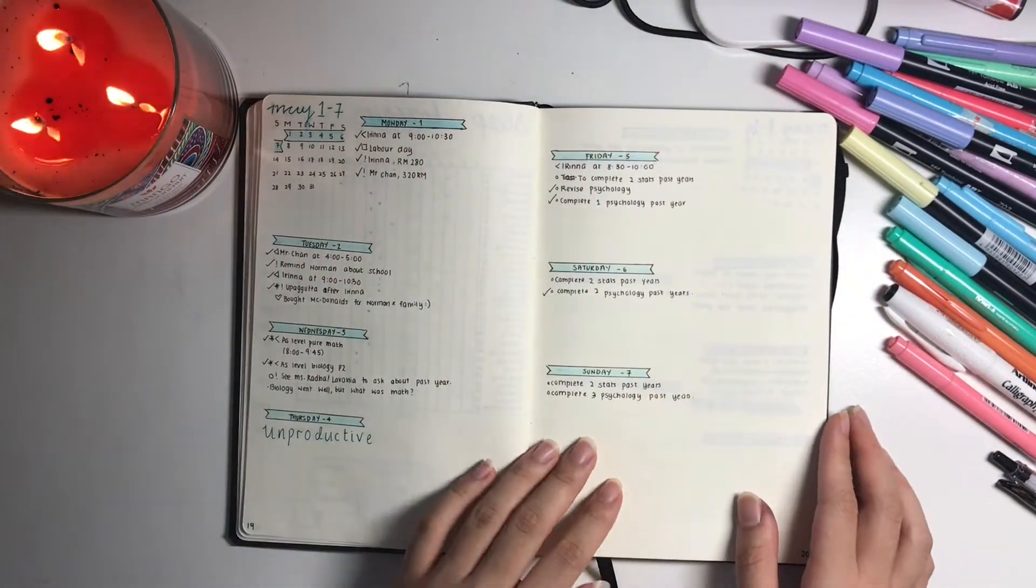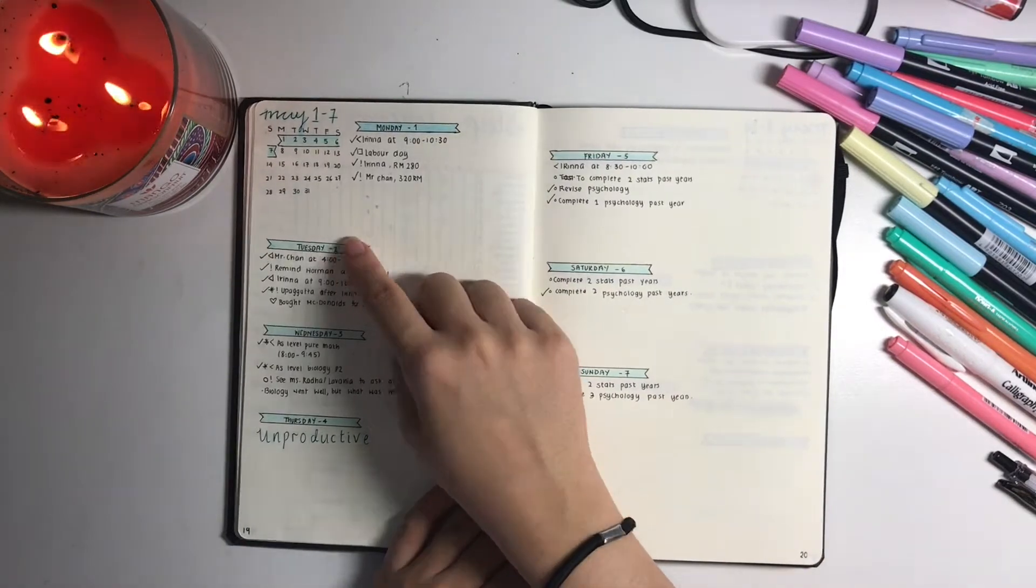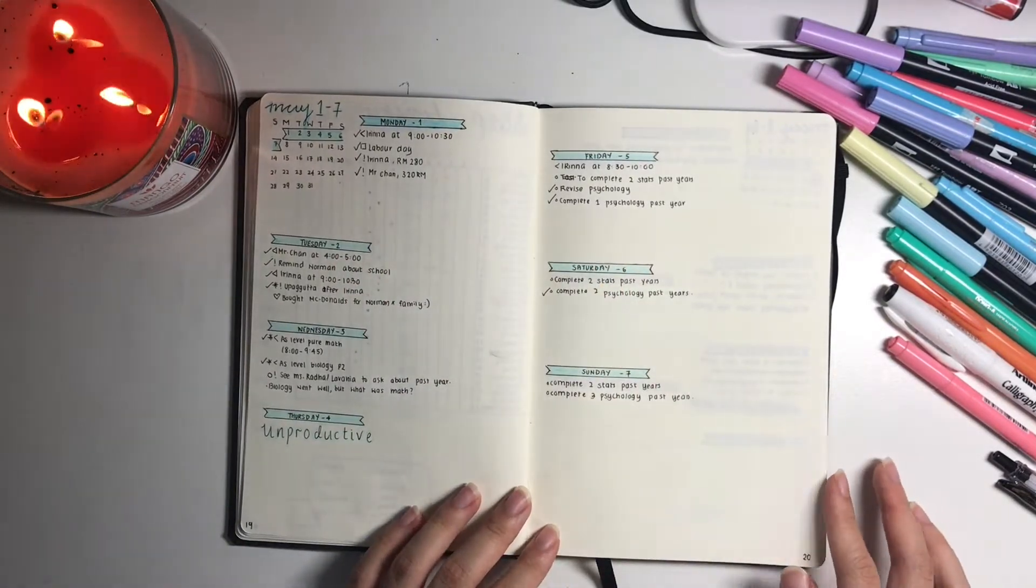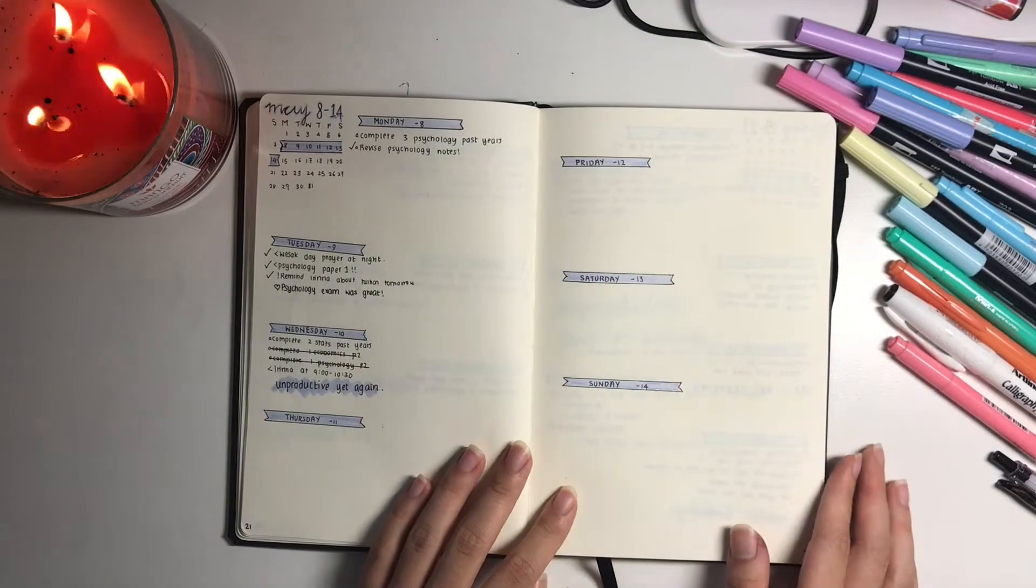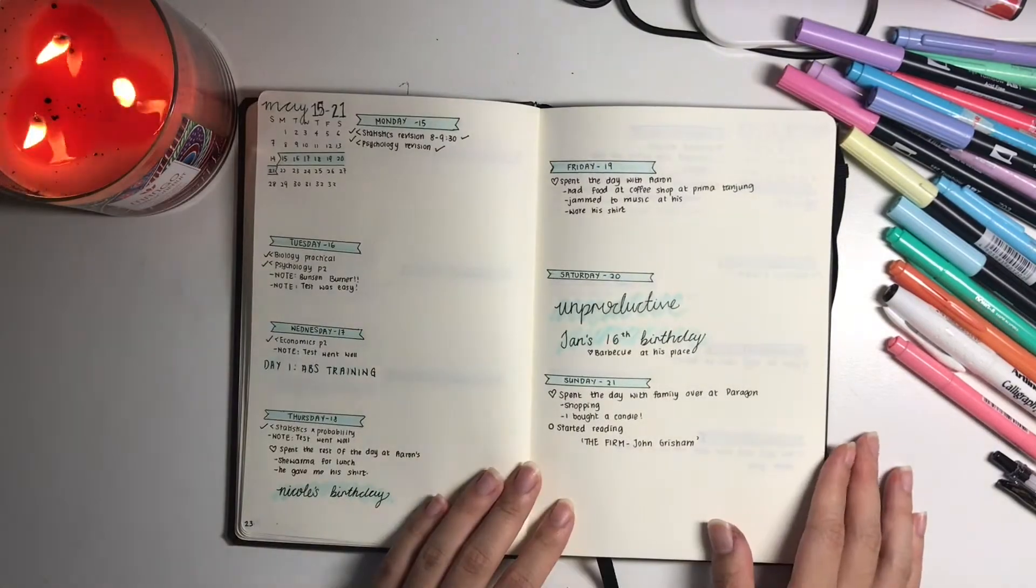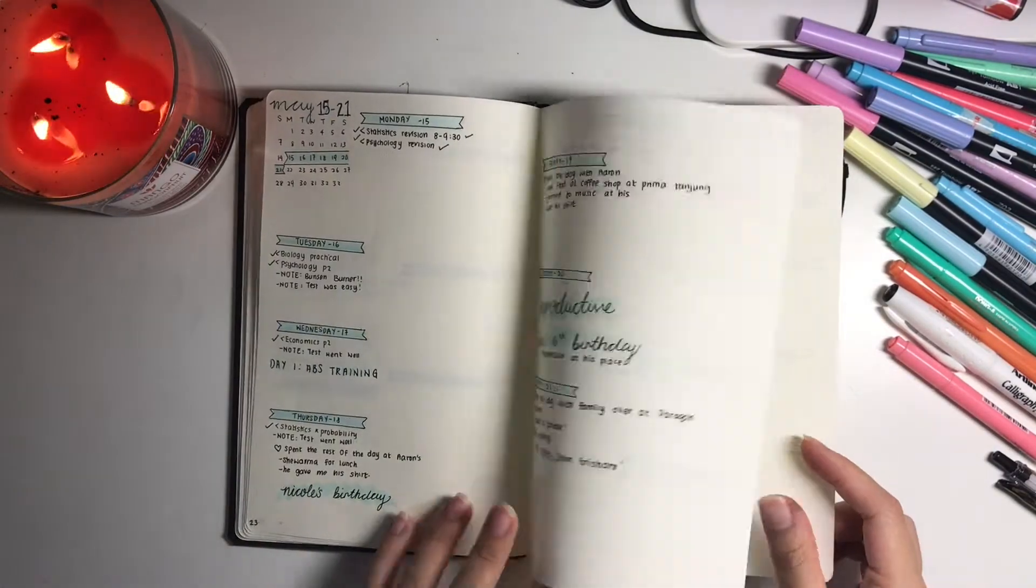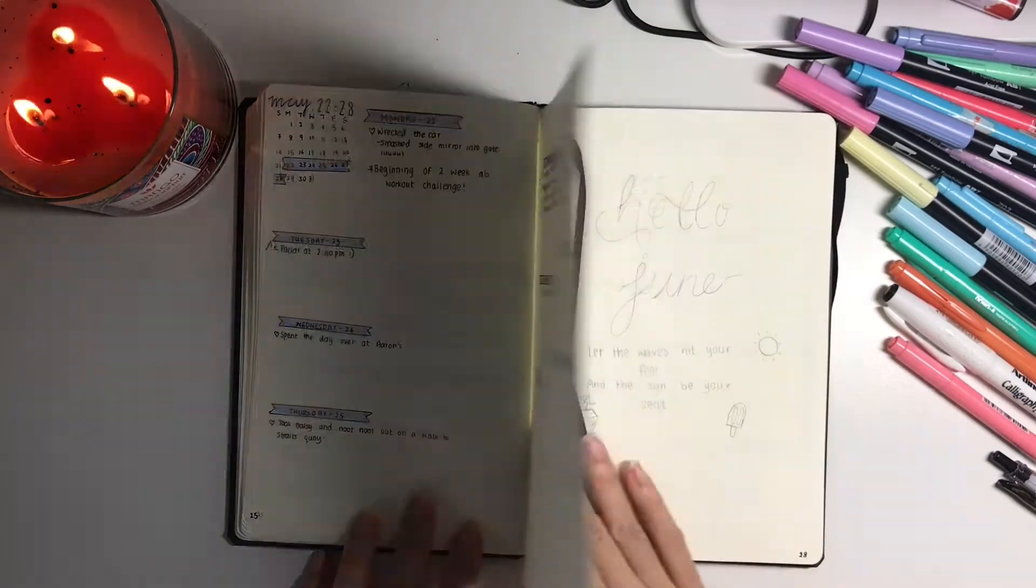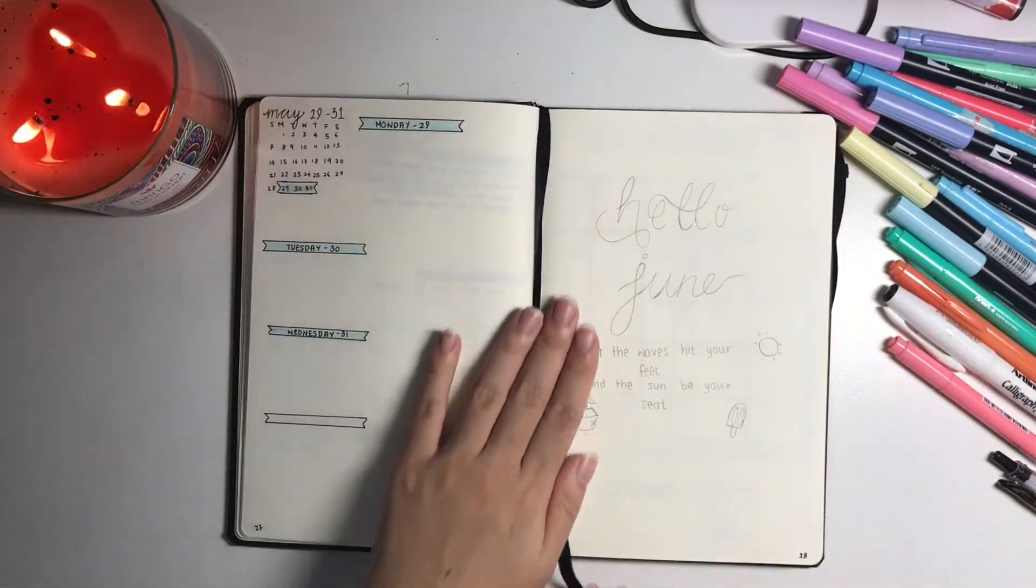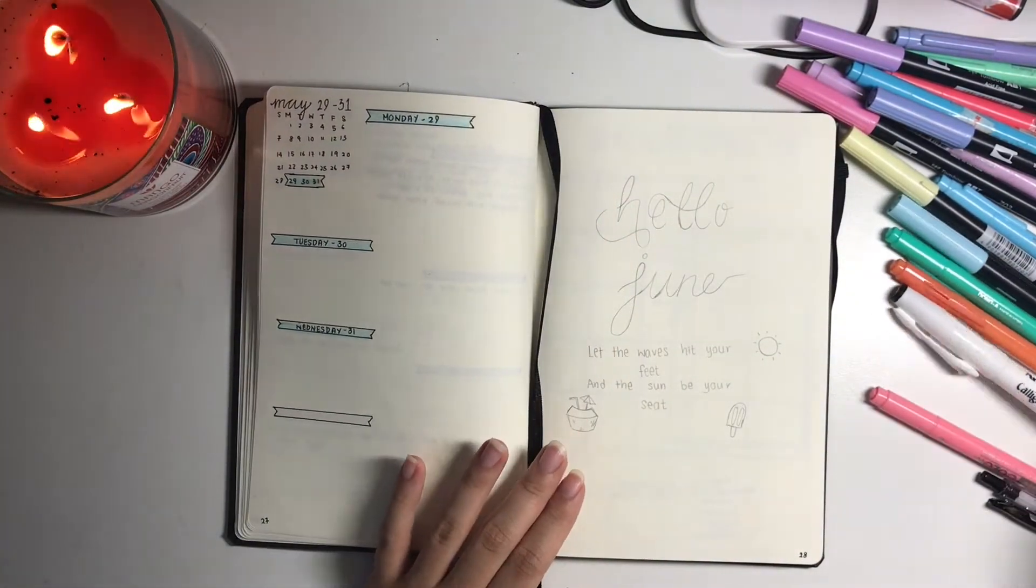And then we have a weekly log. So on the top I write May 1st to 7th for example and I draw a little calendar to shade in which week that is. That's pretty much self-explanatory. As you guys can tell, that's an ongoing theme of two different shades of blues.